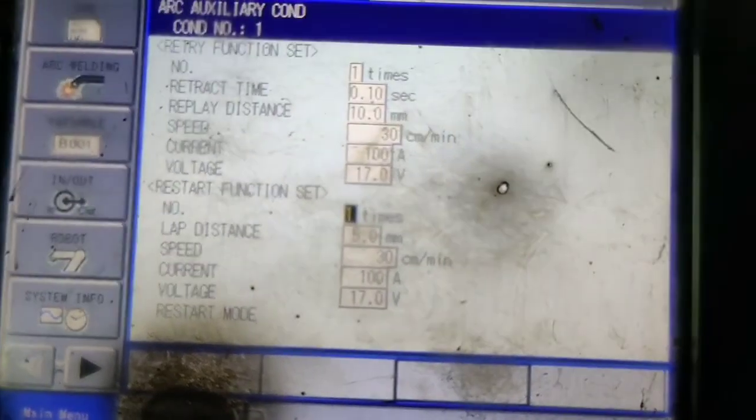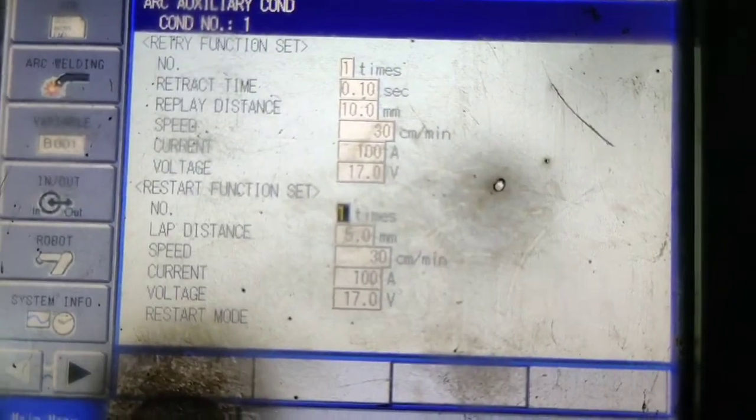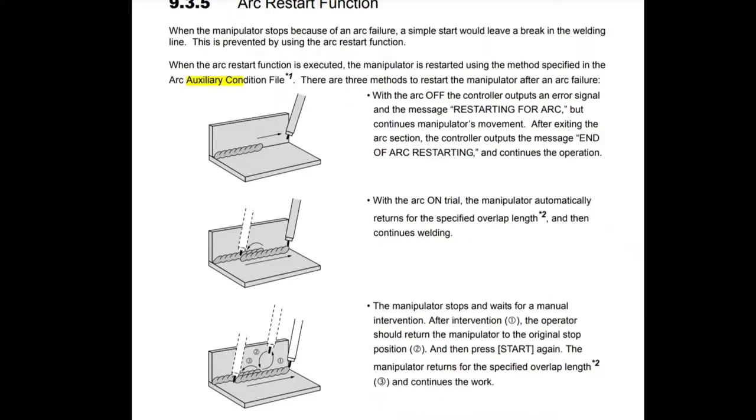When the arc controller outputs an error signal and the message restarting for arc but continues manipulator's movement, after it exits the arc section, the controller outputs the message end of arc restarting and continues operation.